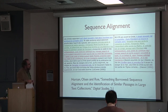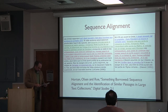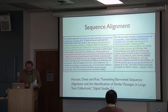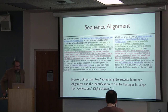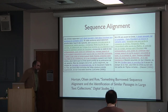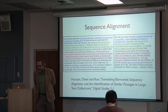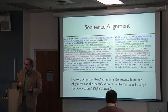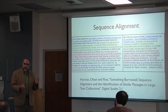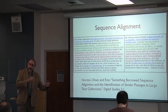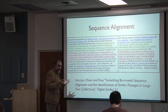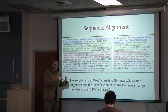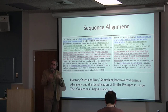Sequence alignment — I think this has the most potential. Mark Olsen has given papers at DH about it. This is from a paper by Horton, Olsen, and Roe titled 'Something Borrowed: Sequence Alignment and the Identification of Similar Passages Used in Large Text Collections.' It is essentially the same thing that Turnitin does. You have some text you're interested in and use sequence alignment algorithms coming out of genomics — where they find patterns of DNA similar to other patterns elsewhere in DNA — and you go through an enormous text base looking for places where the target pattern might show up in some variant form.